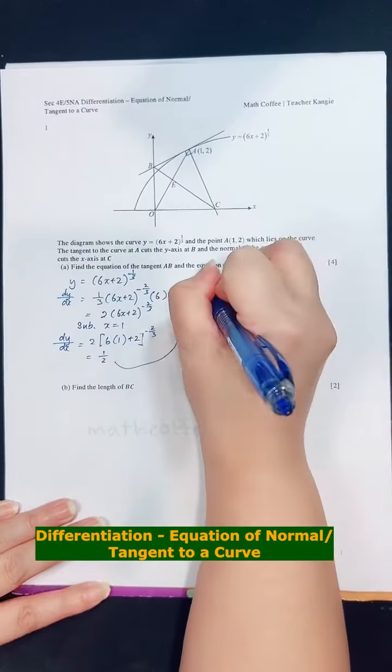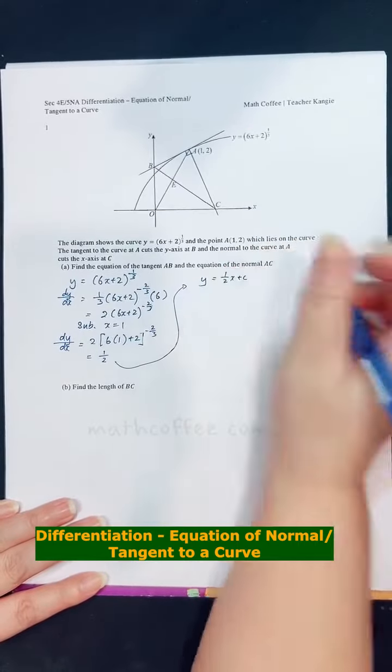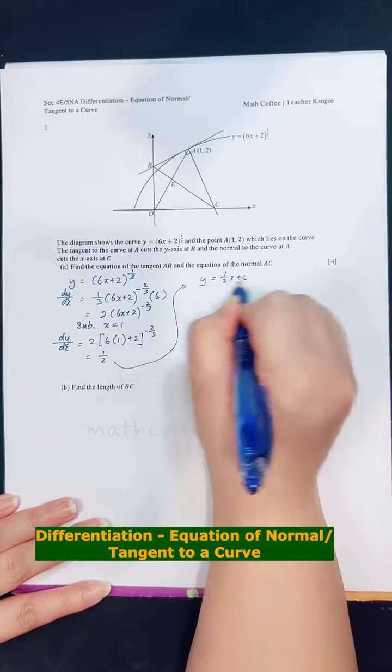So continue here, equation of the tangent line will be y equals to half x plus c. Okay, to find the c, I need to substitute a point which is on the tangent line.